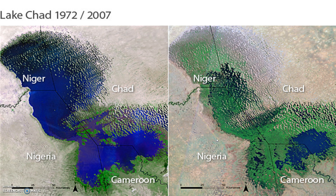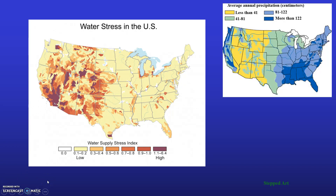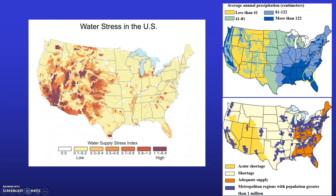We've now covered two examples of impacts on the environment from overdrawing water from lakes or surface water: the Aral Sea and Lake Chad. Now let's talk about water stress in the United States. This map in the top right depicts the average annual precipitation in centimeters, and the map on the bottom depicts areas experiencing various water shortages.